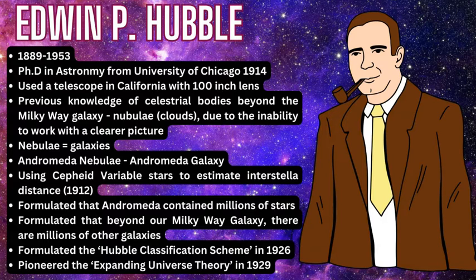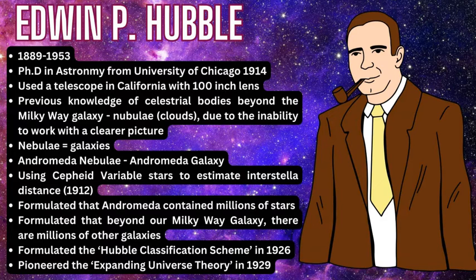A Cepheid star is a star that fluctuates and pulsates its energy over a certain time period or cycle in a way that can be used to calculate distance in space. He then searched other areas and calculated that there were millions of these galaxies — these former nebulae, now known as galaxies — where in more detail you can see individual stars rather than just dust.